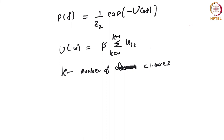For each neighborhood — each clique — U(ik) is the number of pixels in clique k which has the same intensity value as the center pixel. You can choose different kinds of neighborhoods, and each neighborhood is called a clique.